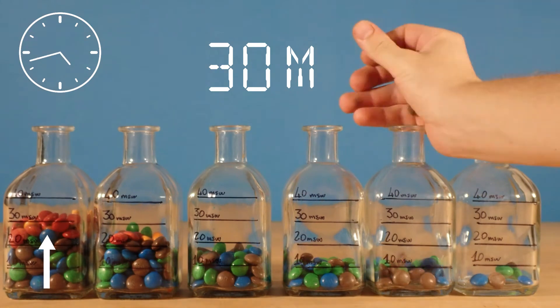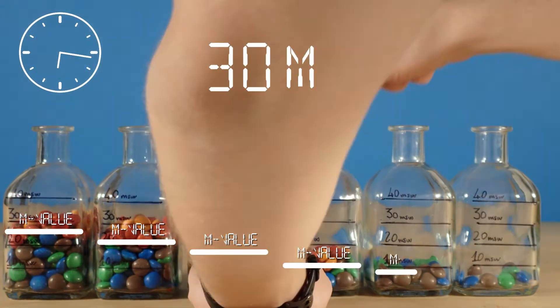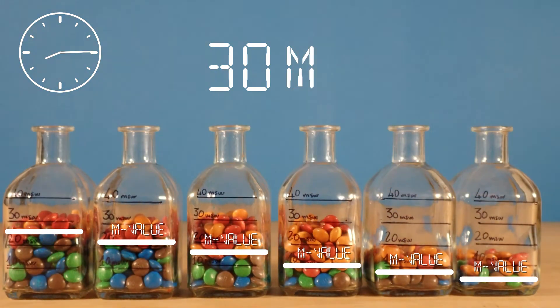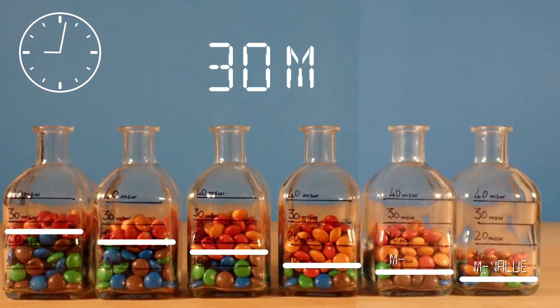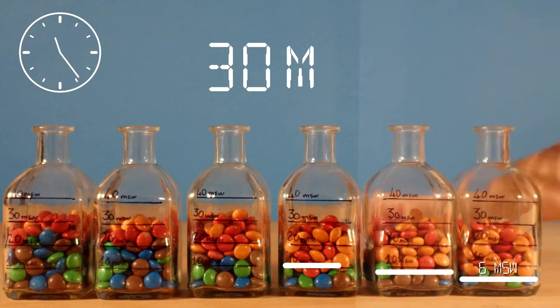Compartments with shorter halftimes take up nitrogen faster, but also have a higher M value, which means that they can tolerate a higher nitrogen load. The 5-minute compartment in this case has an M value equivalent to 27 meters of seawater, and the 120-minute compartment has an M value equivalent to 6 meters of seawater.